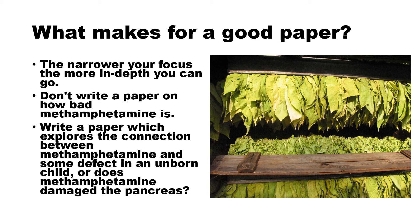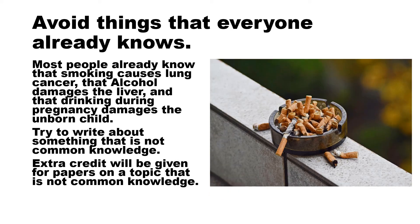What makes for a good paper? The narrower your focus, the more in-depth you can go. Don't write a single paper on how bad methamphetamine is — if you write about that broadly, you'd probably need to produce a book of 500 or 600 pages. Write a paper which explores the connection between one problem and the drug, or maybe methamphetamine and some particular defect in unborn children. Try to avoid things that are common knowledge — most people already know that smoking causes lung cancer, that alcohol damages the liver, and that drinking during pregnancy damages the unborn child. Try to write about something else.